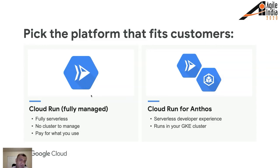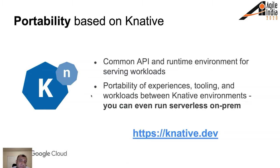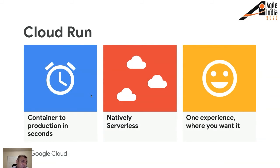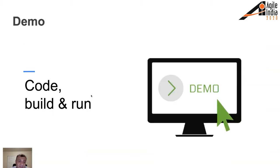Knative provides the API and runtime environments to run serverless on-prem, on Google Cloud, Microsoft Cloud, Amazon Cloud, IBM Cloud — it doesn't matter. Cloud Run gives you container to production in seconds, one experience wherever you want. With hybrid cloud support and being natively serverless, we're now going to go into the demo with about 20 minutes available.